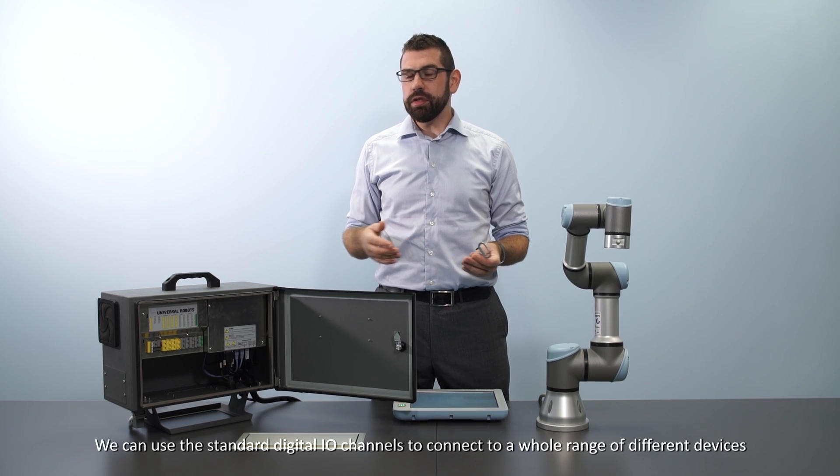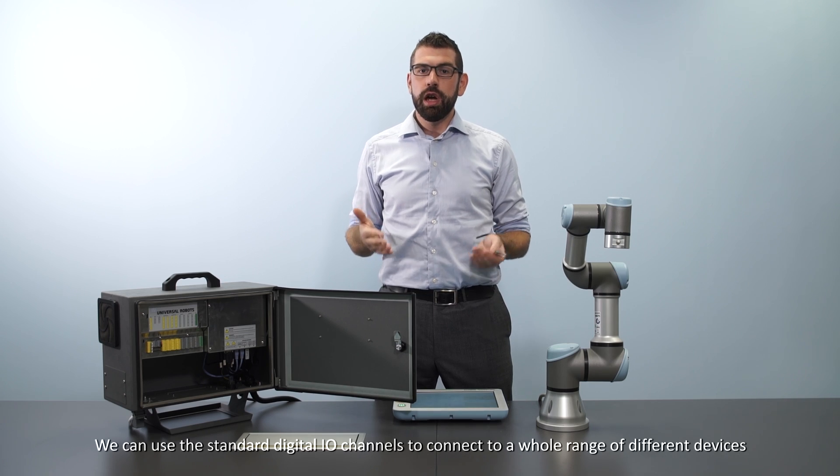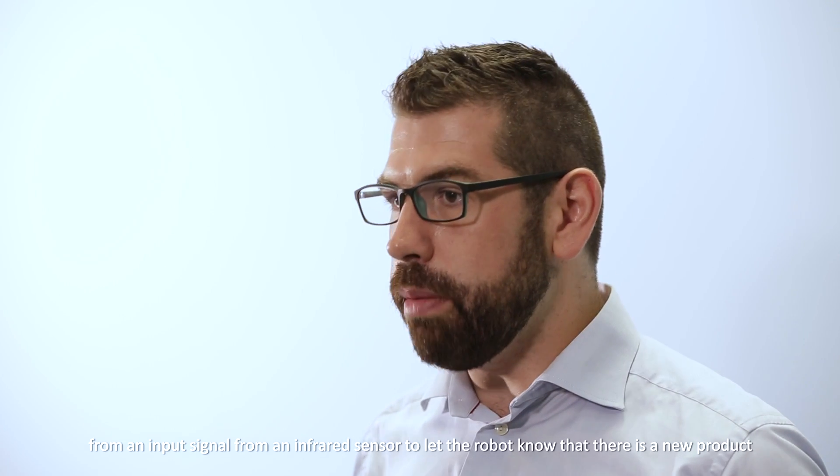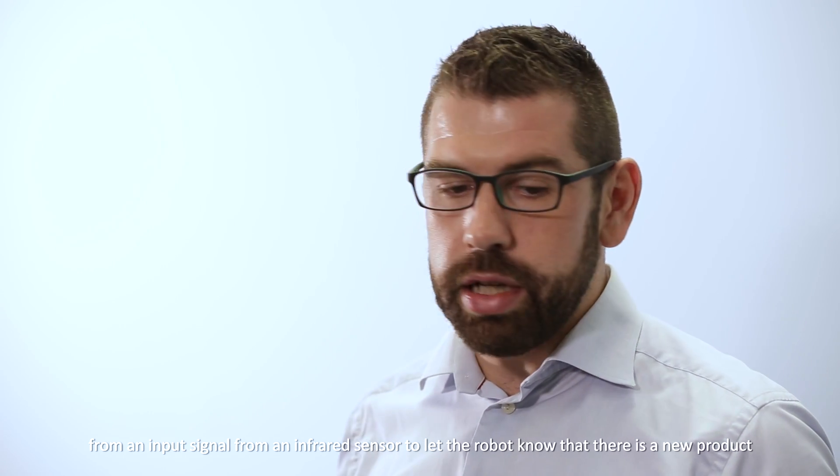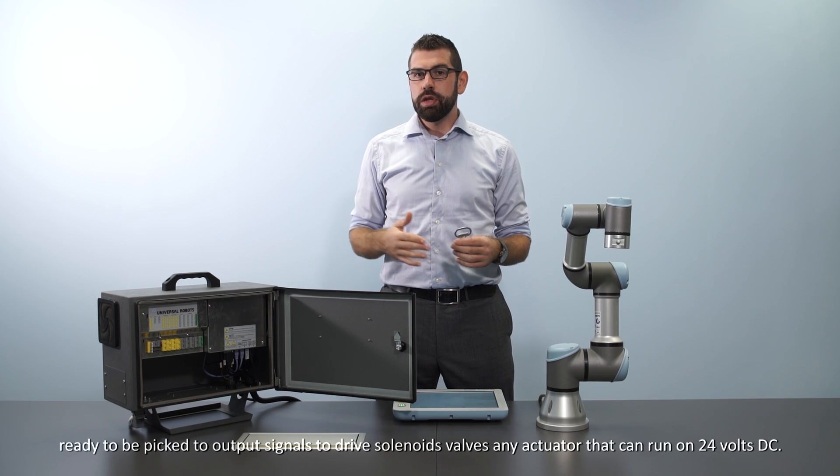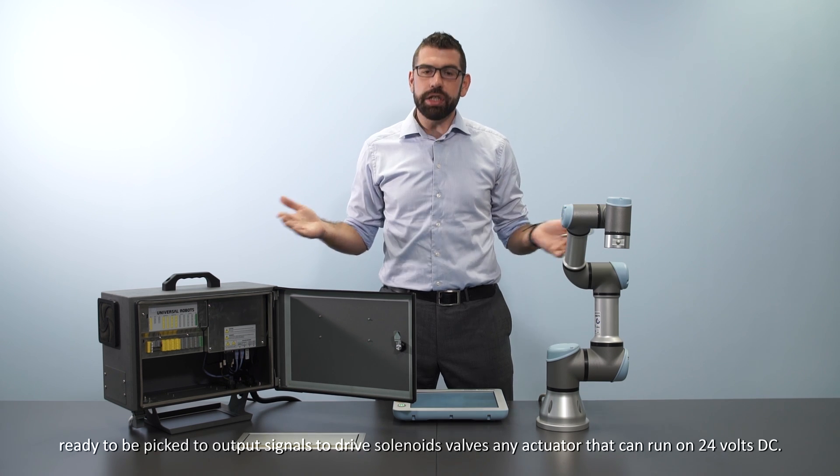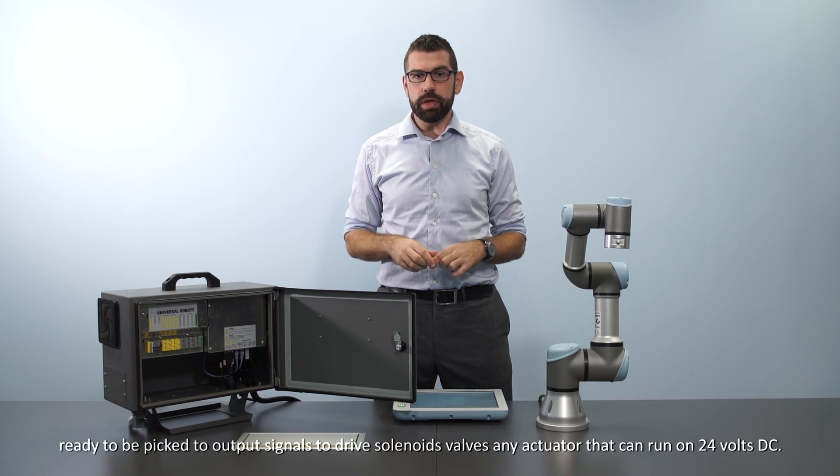We can use the standard digital I.O. channels to connect to a whole range of different devices from an input signal from an infrared sensor to let the robot know that there is a new product ready to be picked to output signals to drive solenoids, valves, any actuator that can run on 24 volts DC.